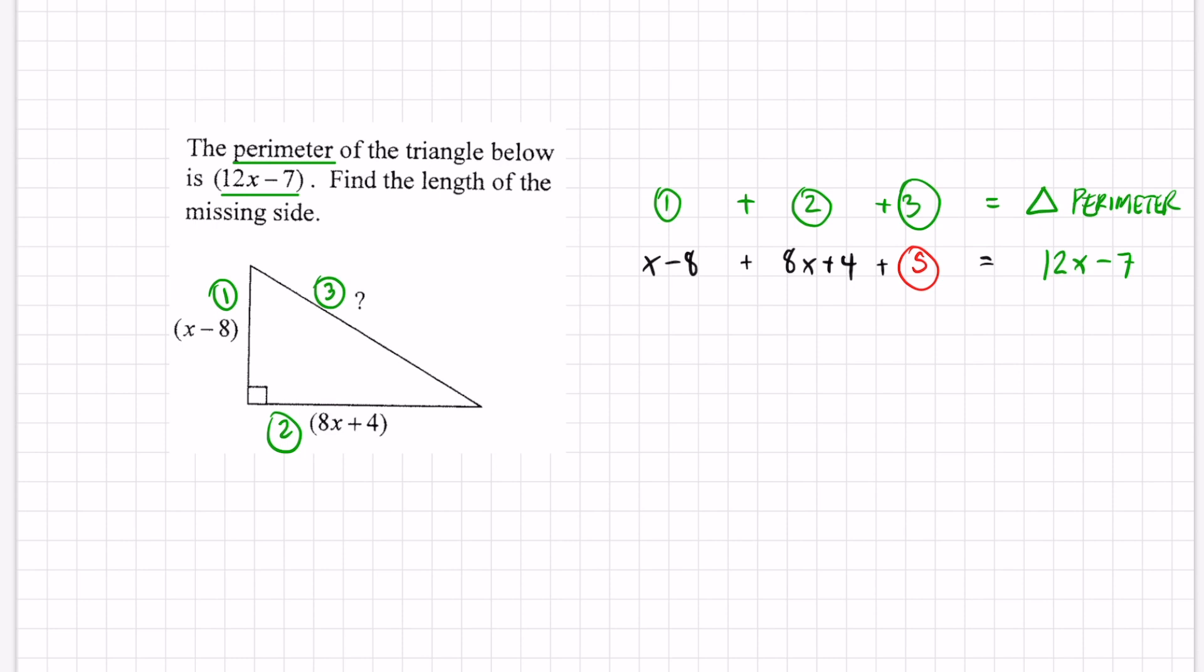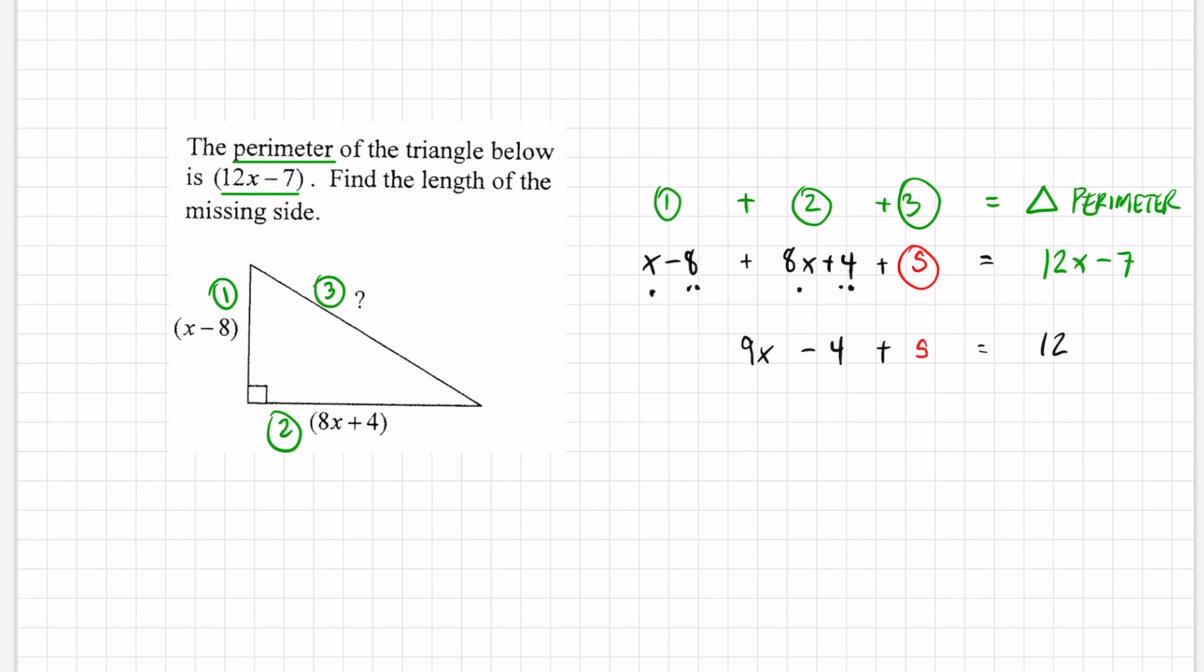Combine like terms first. x plus 8x is 9x. Negative 8 and a 4 is negative 4 plus s equals 12x - 7. And now all we have to do is solve for s. You can start doing two things at the same time if you want to. If I want to get rid of that 9x, subtract 9x to both sides. And if I want to get rid of that 4, add a 4. And if I do that you can see these are going to cancel.